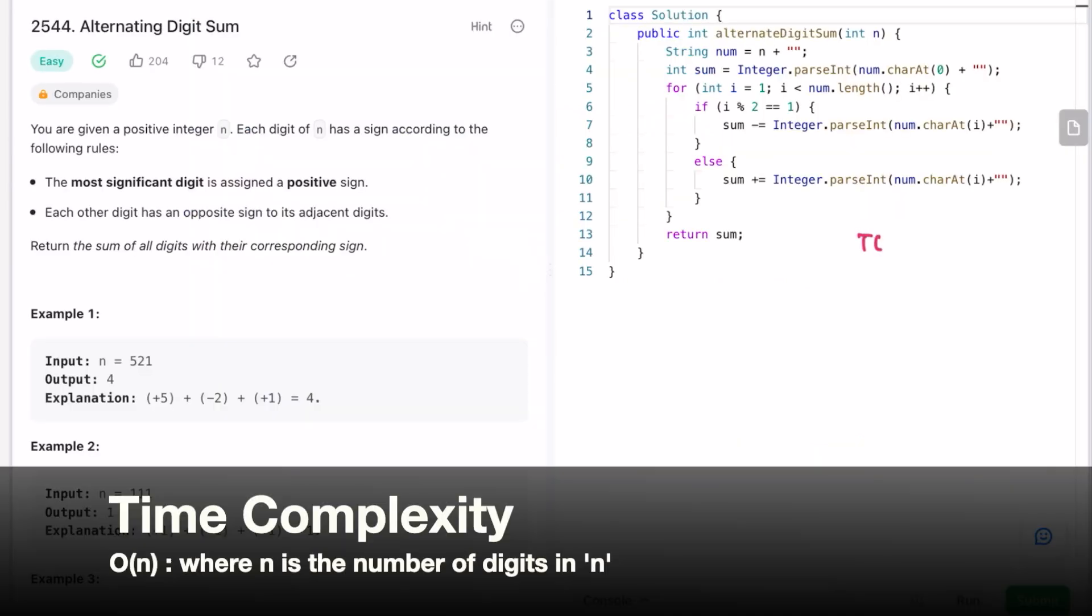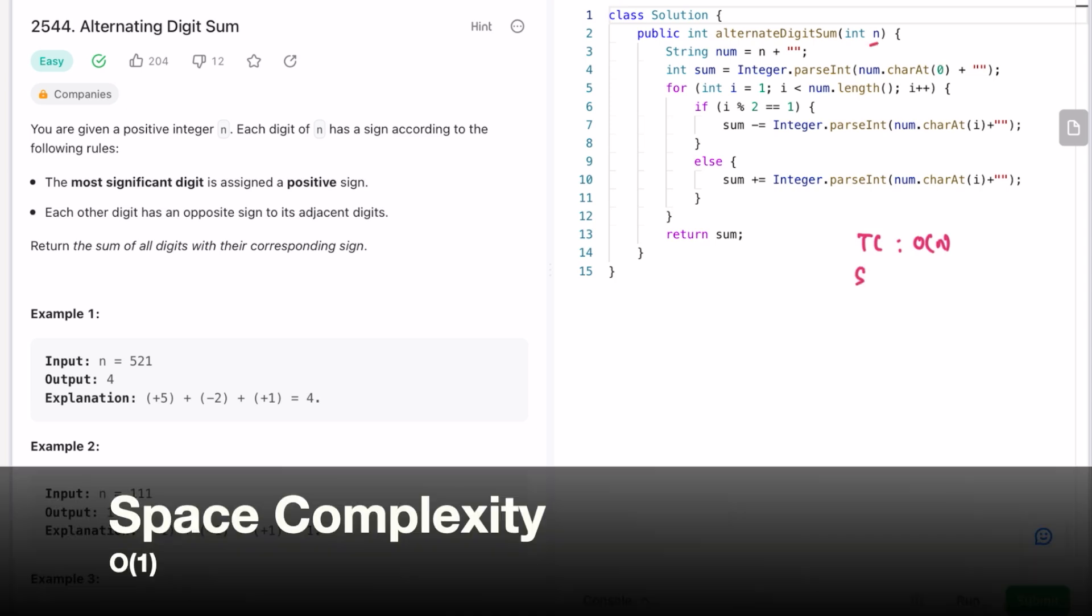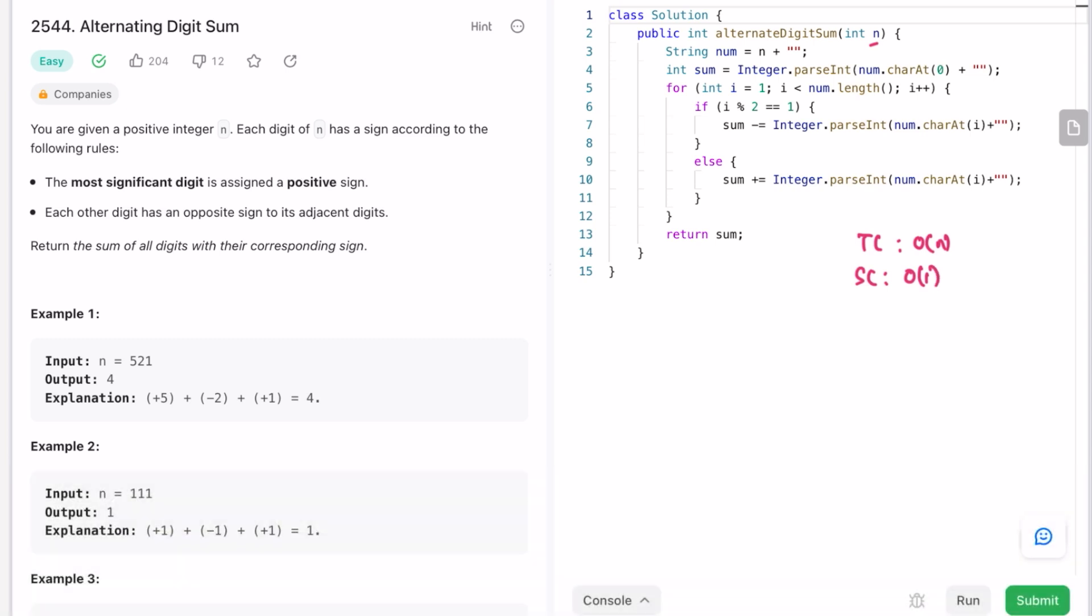You can try for other examples, but this is the overall code. The time complexity of this approach is O(n), where n is the length of the input num. And the space complexity is constant because we are not using any extra space. That's it guys, thank you for watching, and I'll see you in the next one.